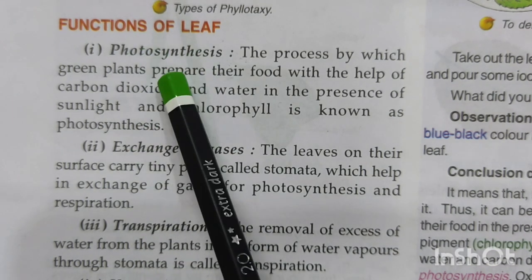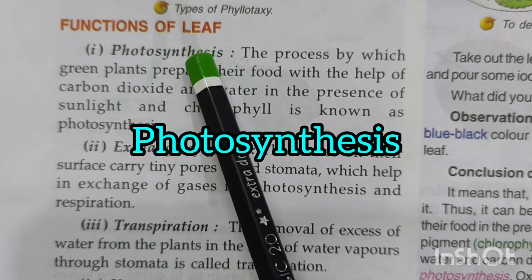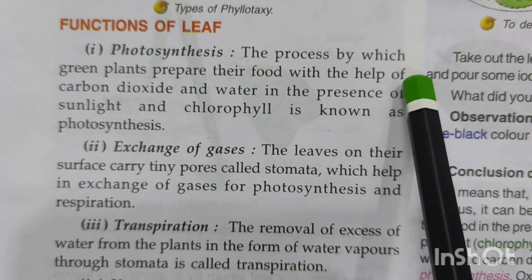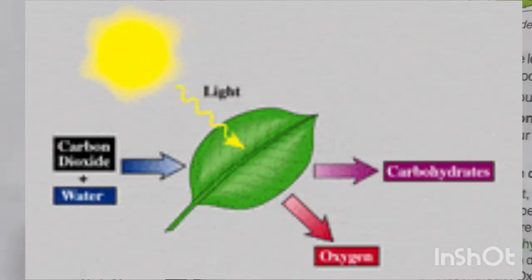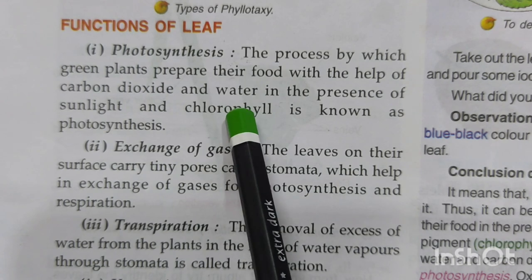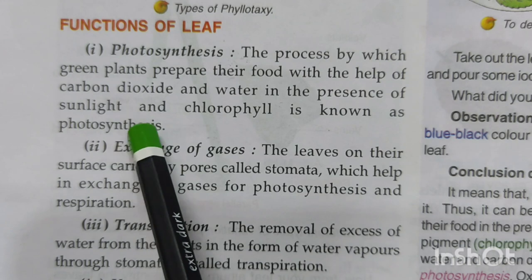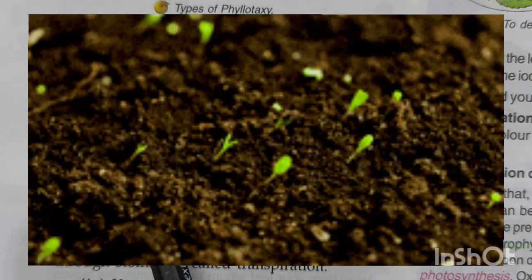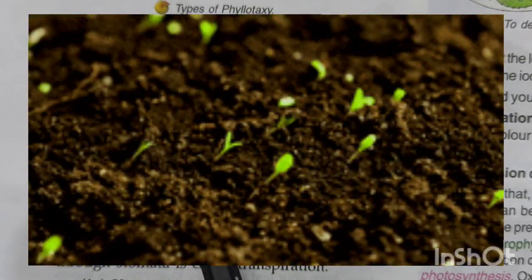Now let's see the functions of the leaves. The first and foremost function of the leaf is to make food. The process by which green plants make their food with the help of carbon dioxide and water, in the presence of sunlight and chlorophyll — the green color pigment present in the leaves — is known as photosynthesis. This is the most important function of a leaf, because without photosynthesis plants cannot survive.